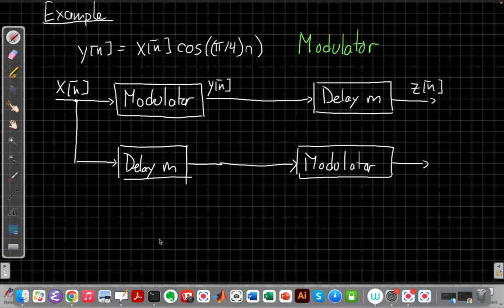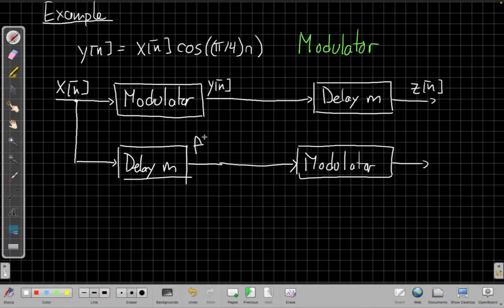I'll call the output of the delay box f[n] and the new output of the modulator g[n] and our key question here is the same as in the handout I made.